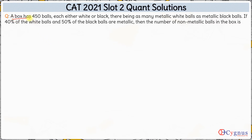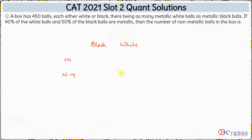In this question, a box has 450 balls, each either white or black. The number of metallic white balls is the same as the number of metallic black balls. There are metallic and non-metallic black balls, and similarly metallic and non-metallic white balls. The total number of balls is 450.